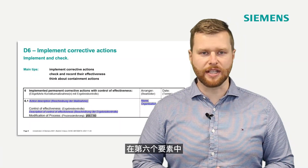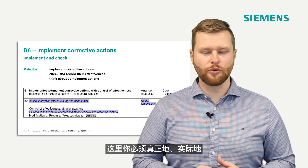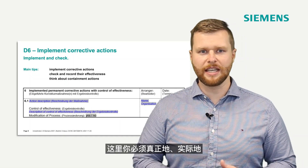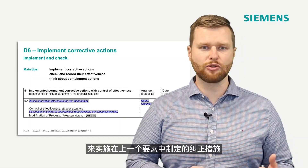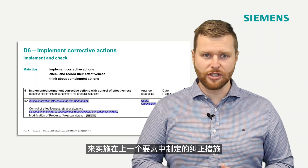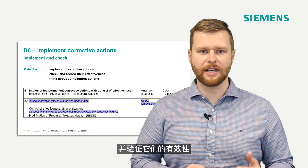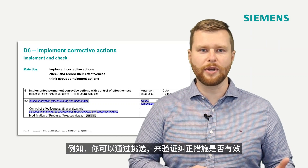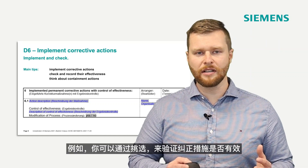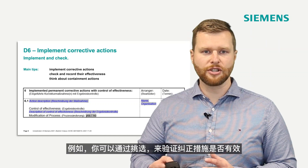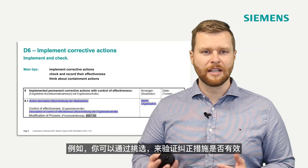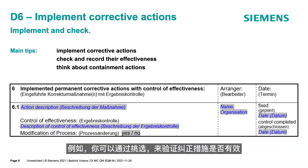In discipline number six, you have to truly and physically implement all the described corrective actions from the previous discipline and verify their effectiveness. For example, you can still do some sorting and check the results after the implementation of the corrective actions, to be sure that this is the right corrective action for the right root cause.